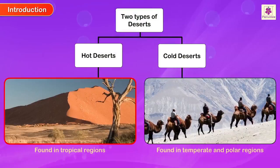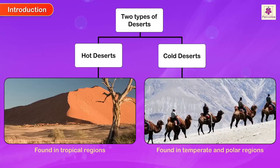There are basically two types of deserts: hot deserts found in tropical regions, and cold deserts found in temperate and polar regions. Let us learn a little more about these deserts.